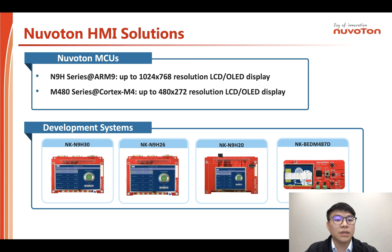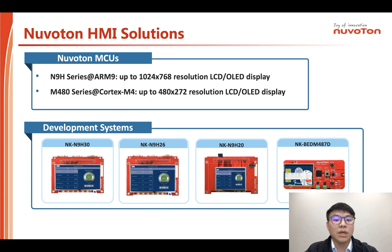The second is the M480 series. The Cortex-M4 core speed comes up to 192MHz and supports up to 480 by 272 resolution display — a middle-end solution. The third core is M0, with core speed up to 72MHz. This is a low-end solution, and we are preparing the evaluation board and some documents, which will be coming soon.